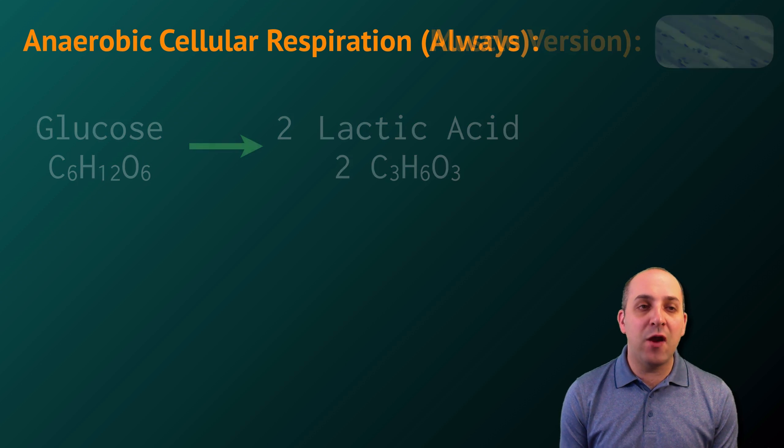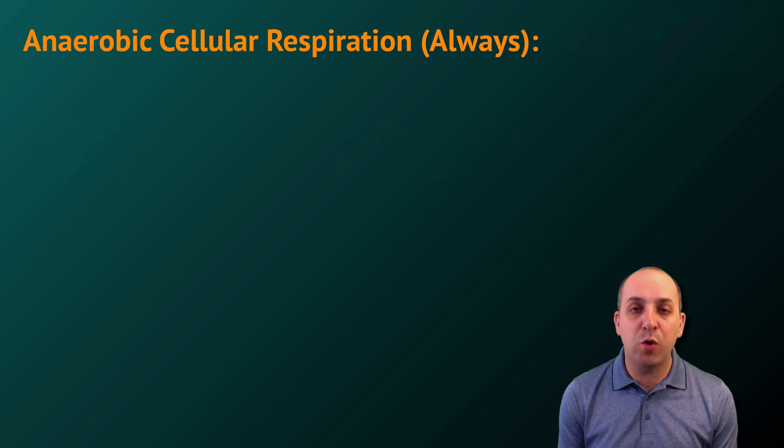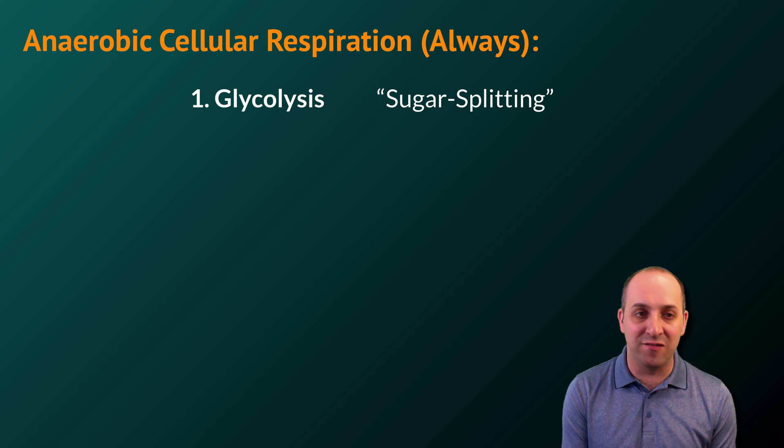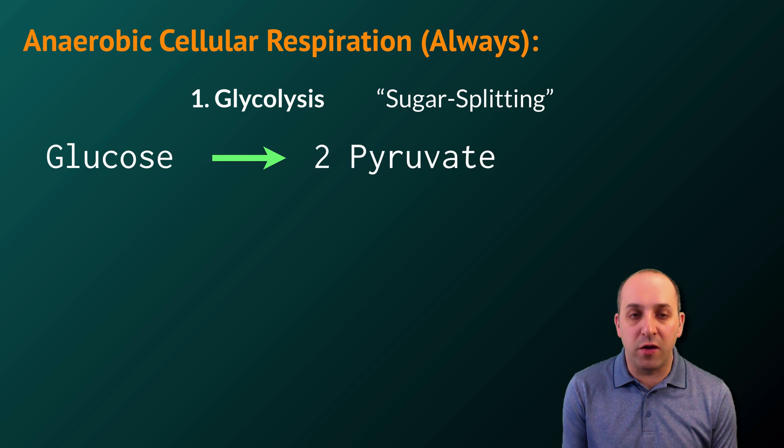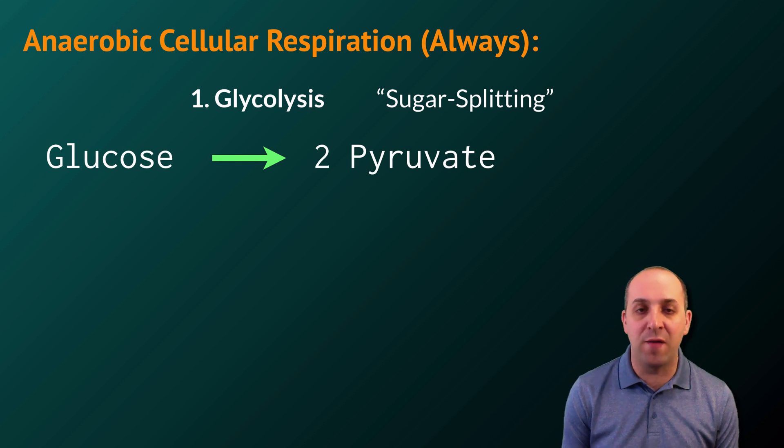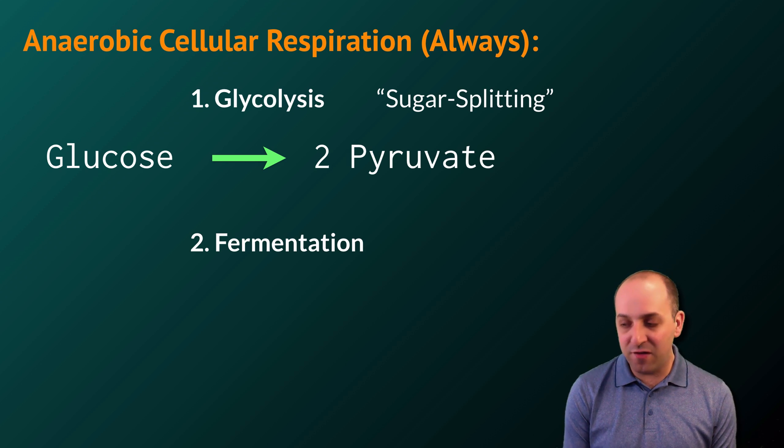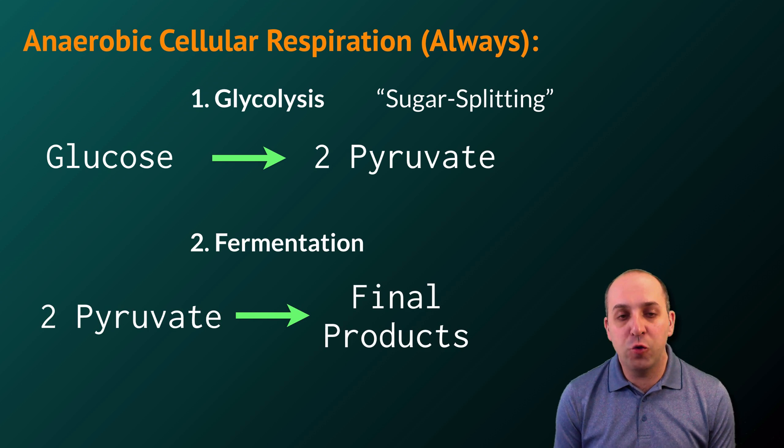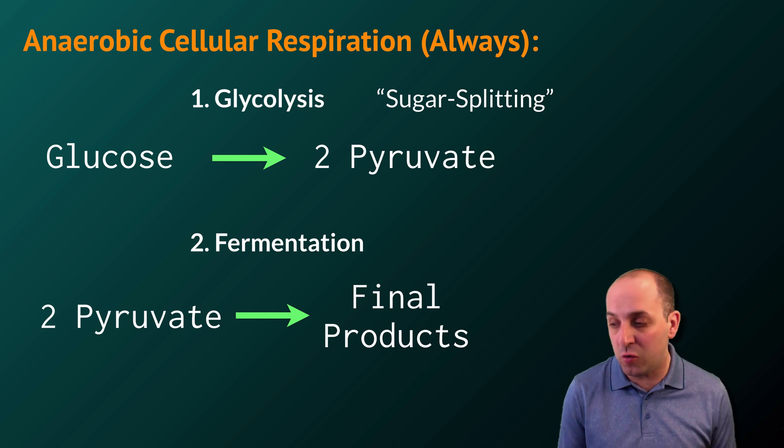Regardless of how it happens, anaerobic cellular respiration will always require two major processes. The first process, known as glycolysis, will take a glucose molecule and break it into two pyruvate molecules. The second process, fermentation, will take those two pyruvate molecules and convert them into the final products.